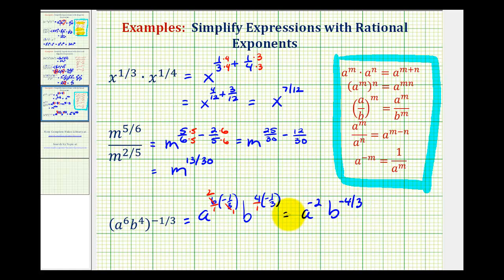But we can't leave this expression with negative exponents. So if we think of this as a fraction with a denominator of one, if we move a to the negative two to the denominator, it'll become a to the positive two. And if we move b to the negative four-thirds to the denominator, it'll become b to the positive four-thirds. So this will leave us with one all over a to the second, b to the power of four-thirds.